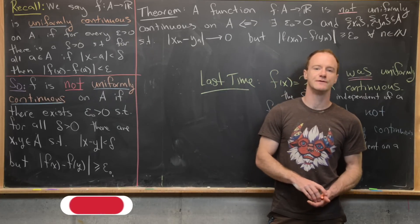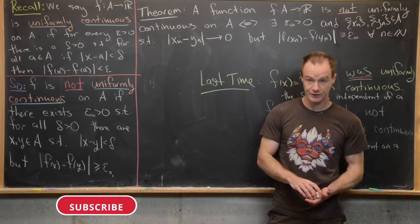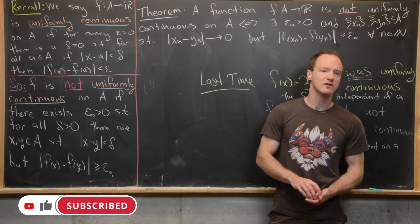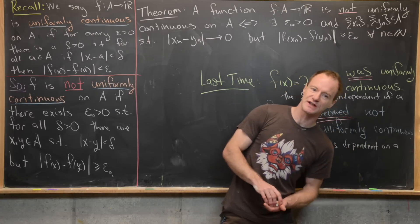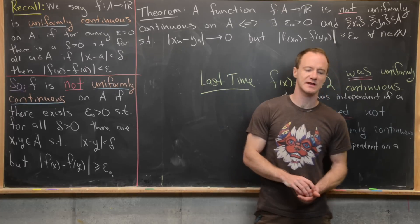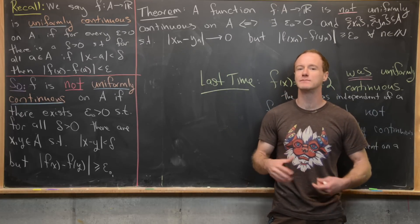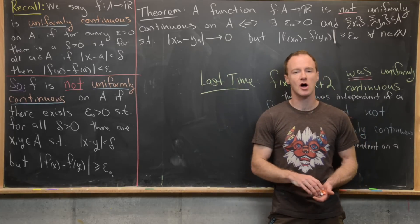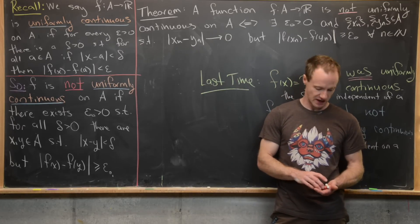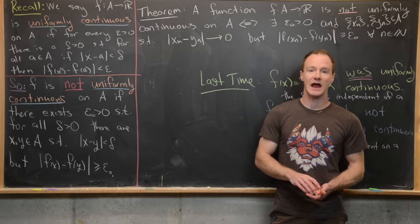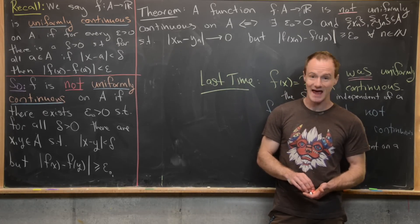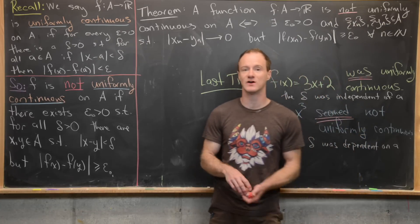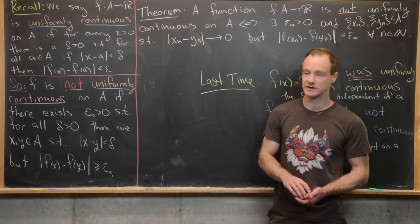We're continuing to look at the notion of uniform continuity. We introduced it in the last video and looked at some examples — one function that was uniformly continuous and one that seemed not to be. Now let's recall the definition of uniform continuity and work towards a theorem which will allow us to show that a function is not uniformly continuous.